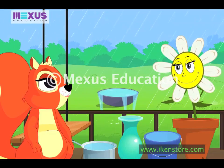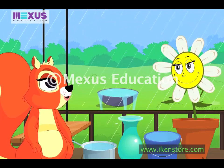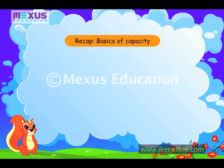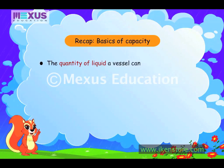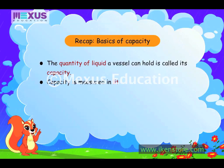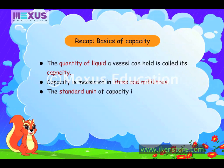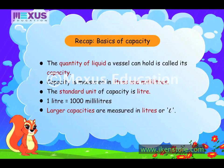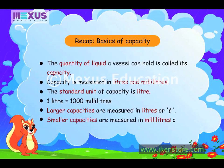I hope you understood, Amber. Yes Daisy, I understood everything. Thanks for explaining capacity. The quantity of liquid a vessel can hold is called its capacity. Capacity is measured in litres and millilitres. The standard unit of capacity is litre. One litre is equal to 1000 millilitres. Larger capacities are measured in litres and smaller capacities are measured in millilitres.